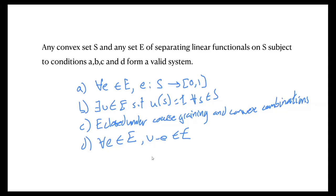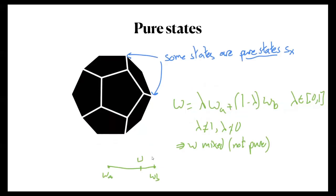So the space of GPT systems is essentially all possible convex sets S combined with a set E of separating linear functionals. This answers our first question, but it may not be satisfying because we don't really want just the generic form — we want to classify different GPTs. I'll do this by looking at something called the dynamical structure, classifying families of GPTs which share the same dynamical structure. An important component is the set of pure states — the extremal points of the convex set, which cannot be written as convex combinations of two other states.